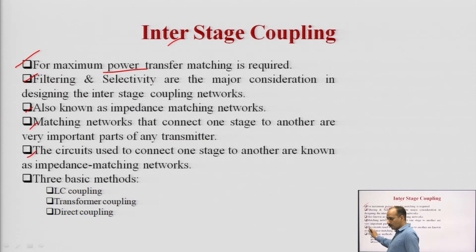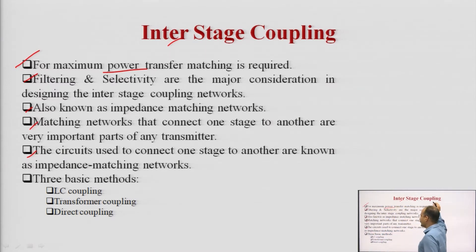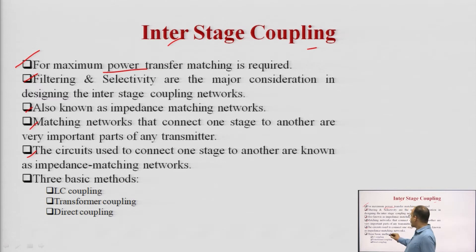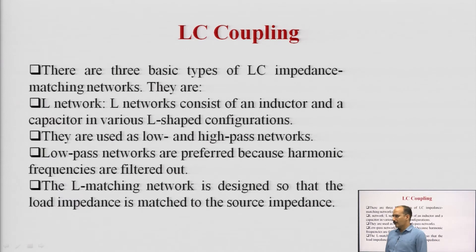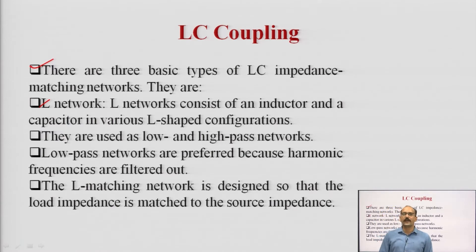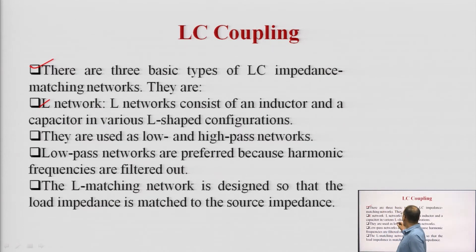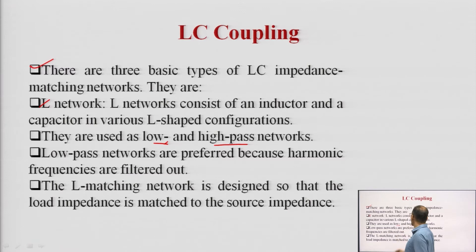The circuit used to connect one stage to another is known as an impedance matching network or interstage coupling. There are basically three types of basic methods for impedance matching: LC coupling, transformer coupling, and direct coupling. We will take into account all these techniques one by one. In LC coupling, there are three basic types of LC impedance matching networks. They are: L network — which consists of an inductor and a capacitor in various L-shaped configurations. They are used as low and high pass networks.